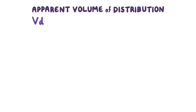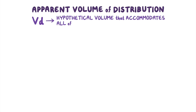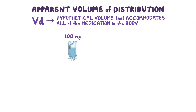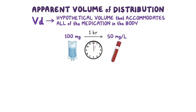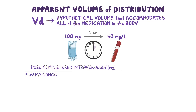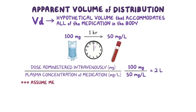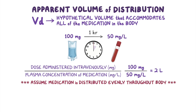An important concept is the apparent volume of distribution, or VD, which represents how extensively a medication is distributed throughout the body. It is the hypothetical volume that accommodates all of the medication in the body if the concentration throughout was the same as in plasma. For example, if we inject 100 mg of a medication into the blood and none of it is excreted, then an hour later we find the plasma concentration is 50 mg per liter. To calculate VD, we divide the dose administered intravenously by the plasma concentration: 100 mg over 50 mg per liter gives a VD of 2 liters. Note that we assume the medication is distributed evenly throughout the body, though that's not the case for most medications.